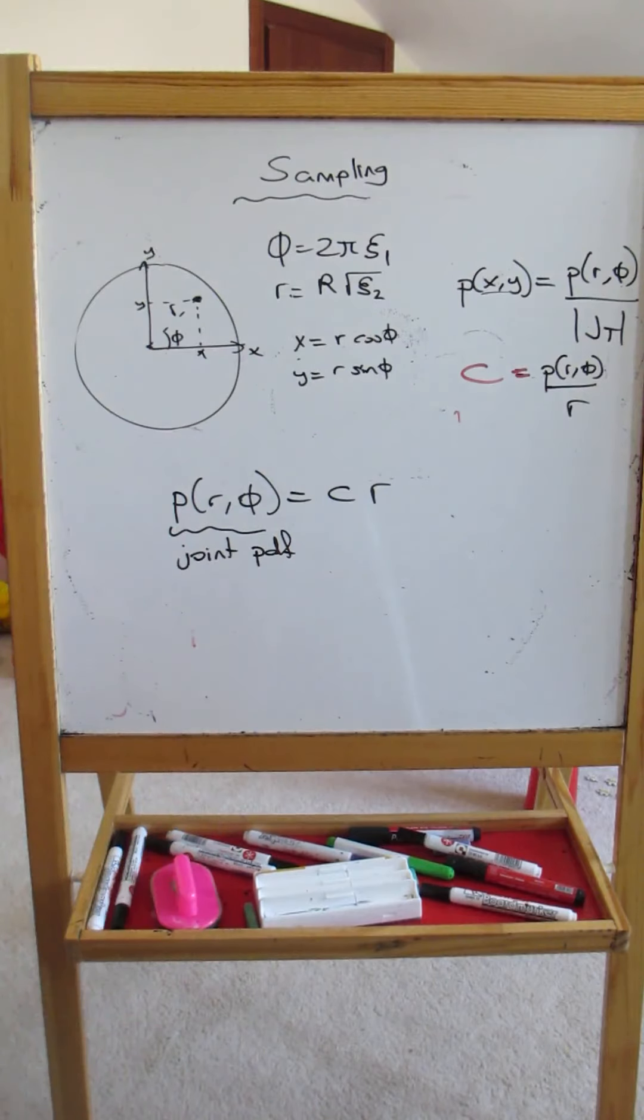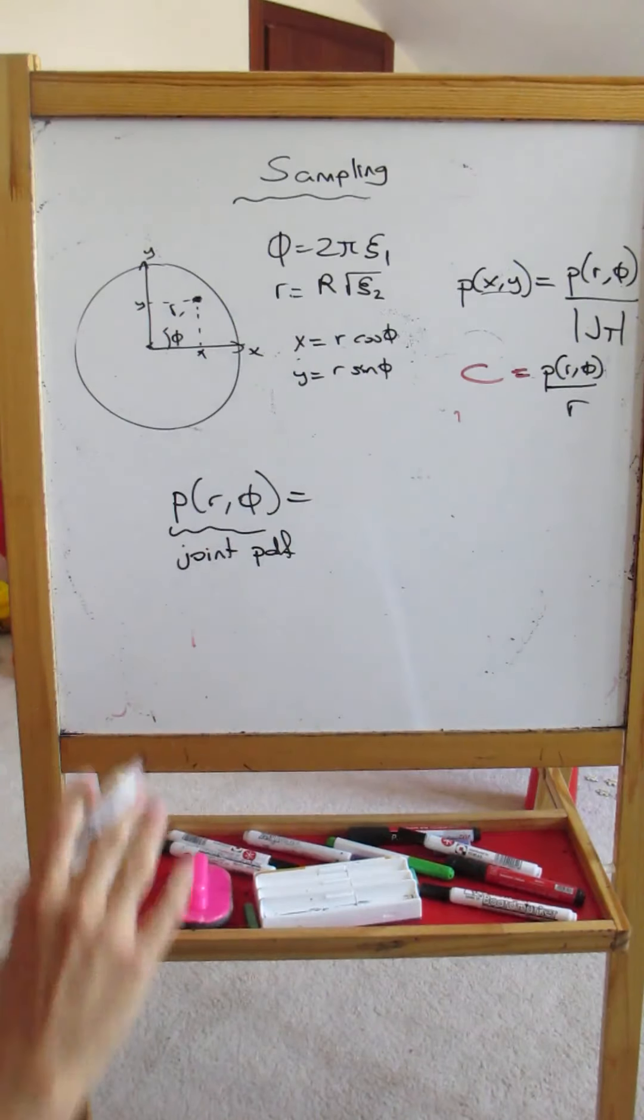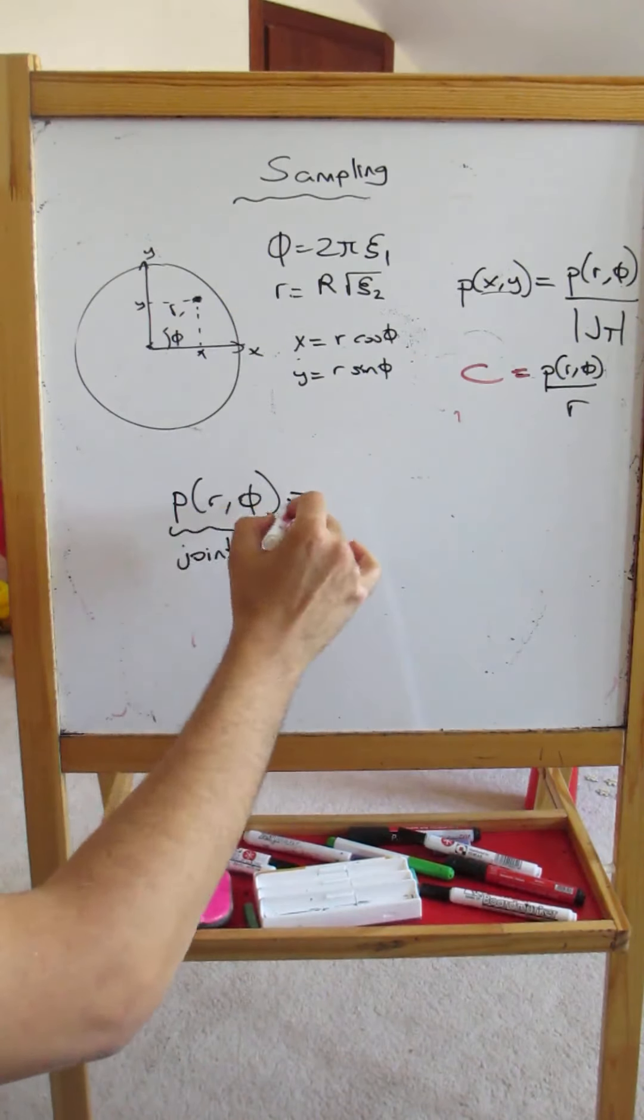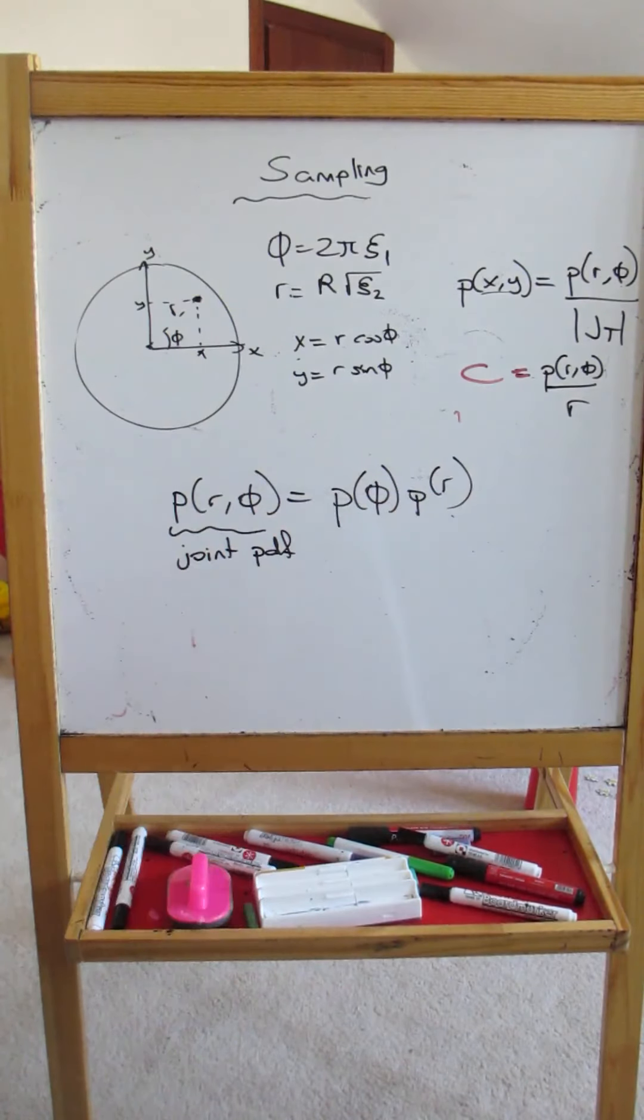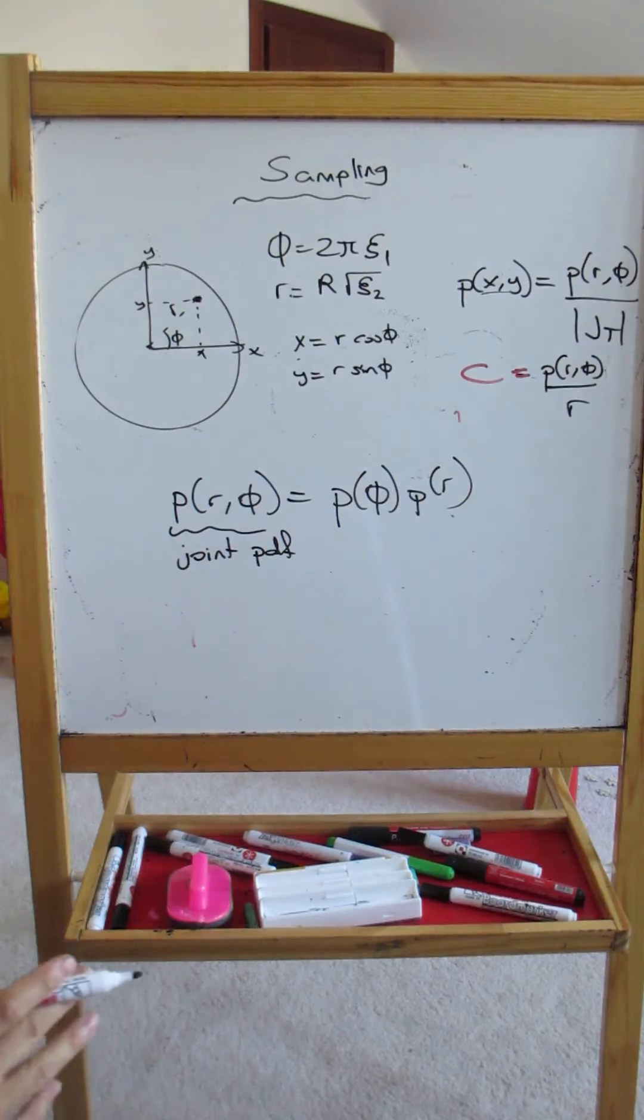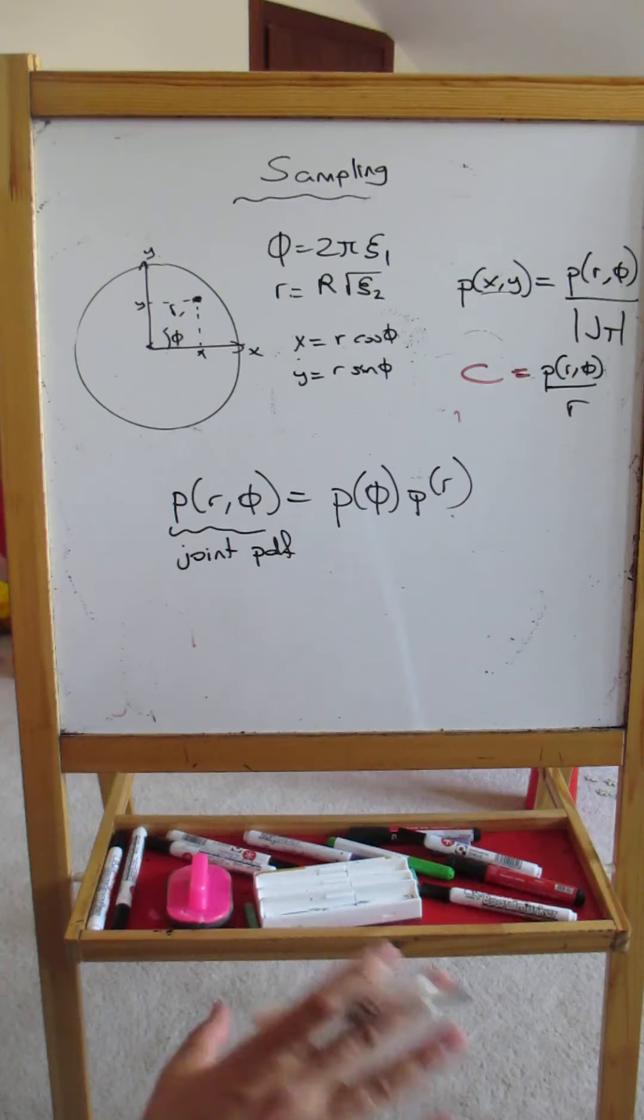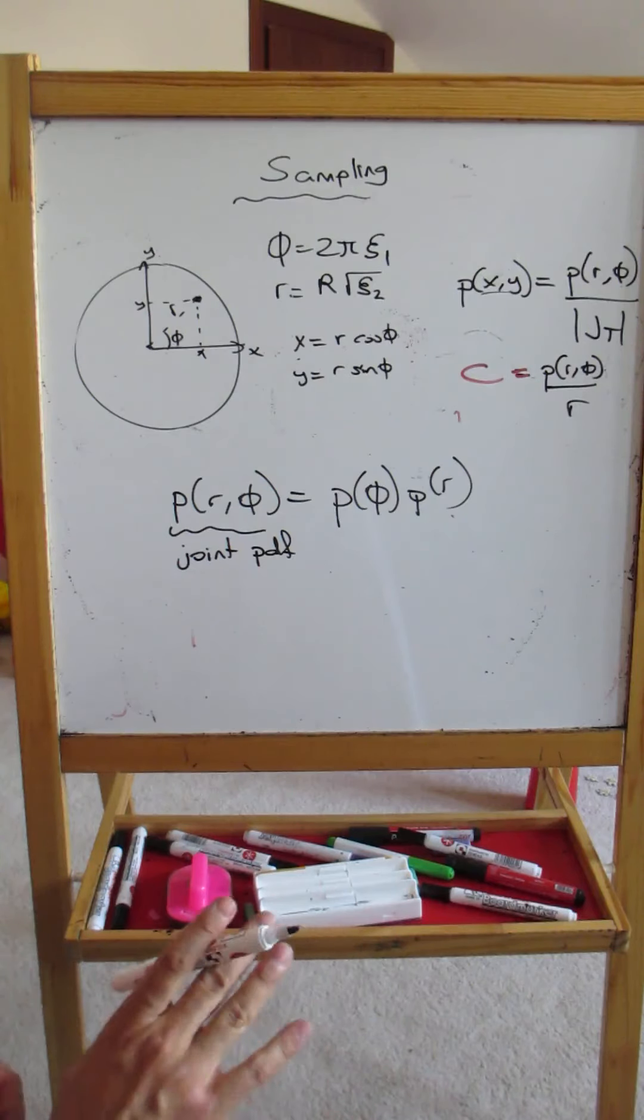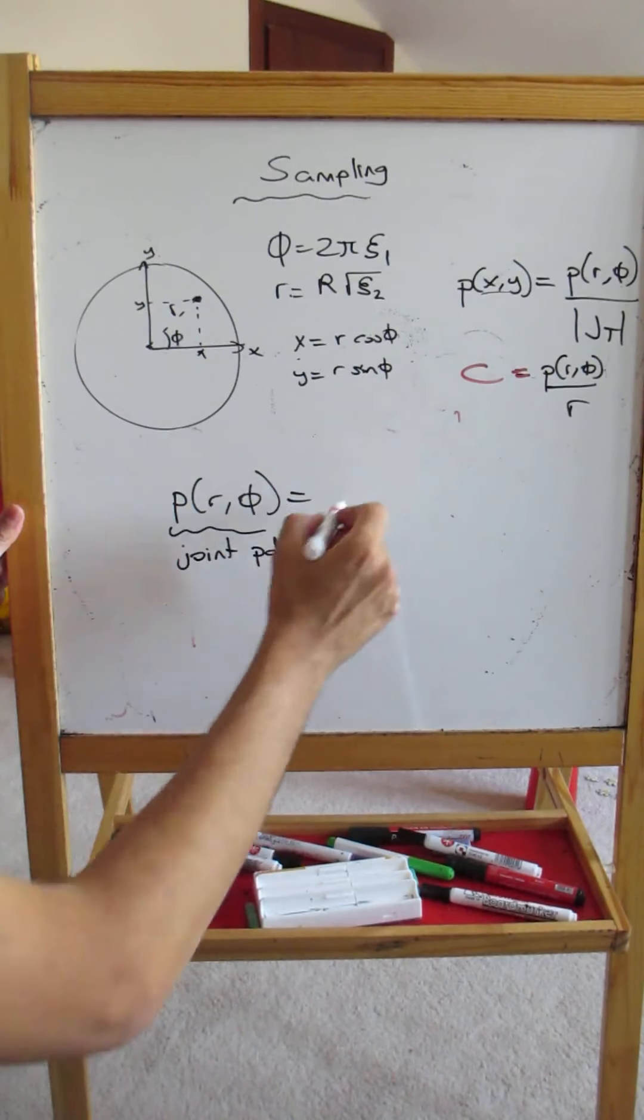Now we have a joint PDF. Some joint PDFs can be separable and some may not be separable. A joint PDF is separable if this can be written as p(phi) times p(r). In this case, this means it's a separable joint PDF, but you cannot write this for everything. Some joint PDFs are not separable, but luckily the PDFs that we will be dealing with are separable. Anyways, let's go back here, so we have here c/r.